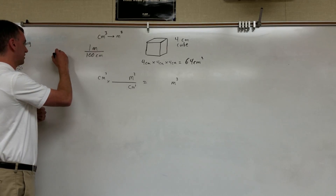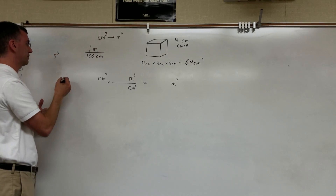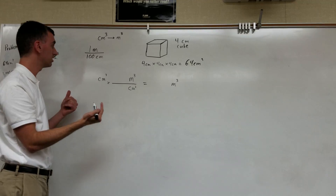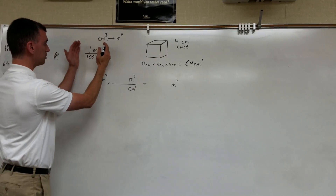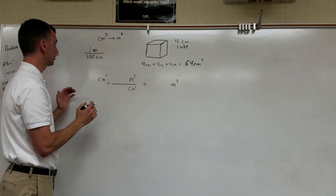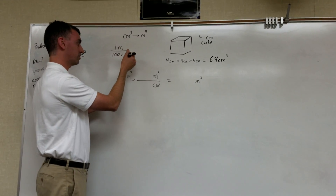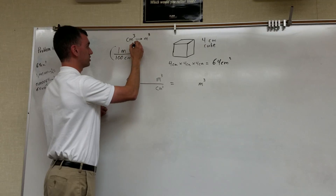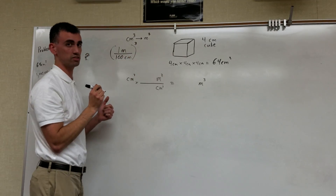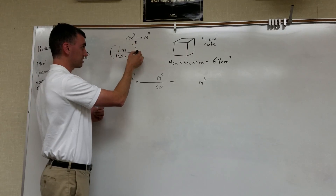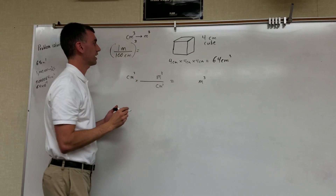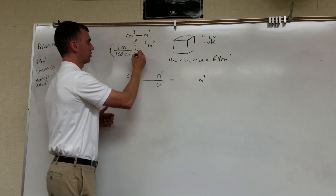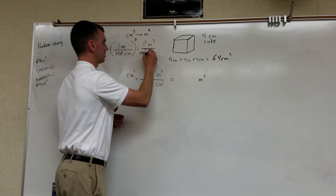Just as 5 times 5 times 5 is 5 cubed, centimeters times centimeters times centimeters gives centimeters cubed. So I'll cube this entire relationship — that takes us from meters per centimeter to cubic meters per cubic centimeter. Cubing everything inside the parentheses gives 1 cubed meters cubed over 100 cubed centimeters cubed.